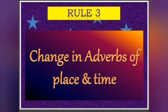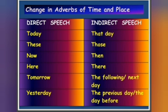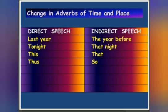Rule number three deals with change in adverbs of place and time. If the direct speech has 'today,' it changes to 'that day'; 'these' to 'those'; 'here' to 'there'; 'tomorrow' to 'the following day' or 'the next day'; 'yesterday' to 'the previous day' or 'the day before'; 'last year' to 'the year before'; 'tonight' to 'that night'; and 'this' to 'that.'